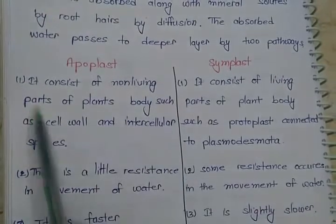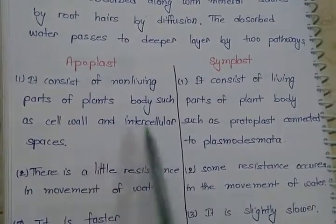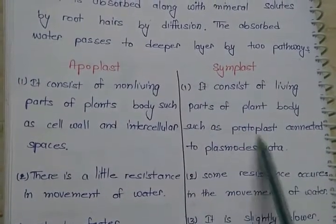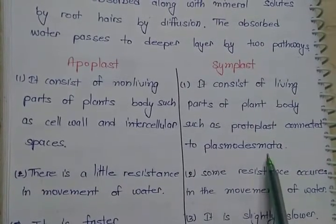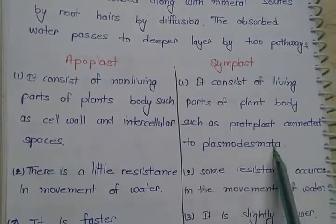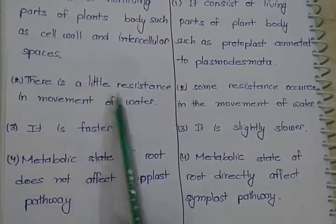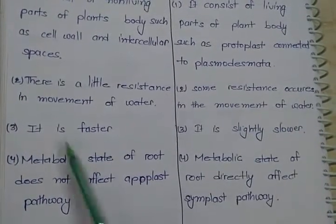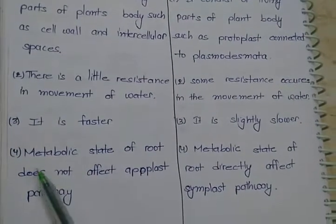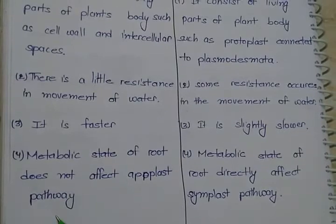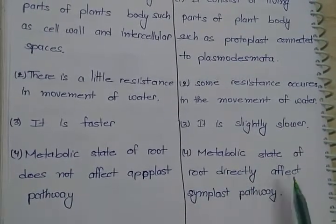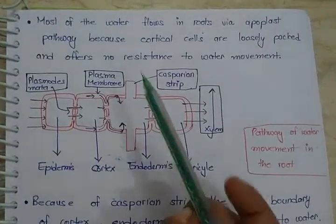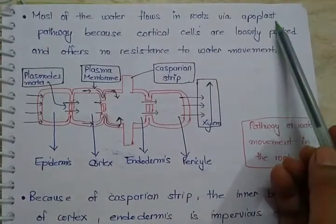In Apoplast, the non-living part of the plant is used such as cell wall and intercellular spaces. While in Symplast, the living part of the plant is used such as protoplast, which is connected by the plasmodesmata. Plasmodesmata two cells ke protoplast ko aapas mein connect karta hai. In Apoplast, there is little resistance in movement of water, while in Symplast, some resistance occurs — it is faster and it is slower. Metabolic state of root does not affect the Apoplast pathway, while metabolic state of root directly affects the Symplast pathway. Most of the water in plants flows through the Apoplast pathway.